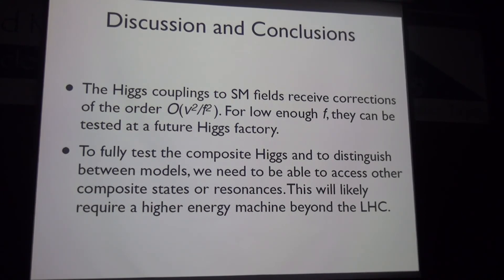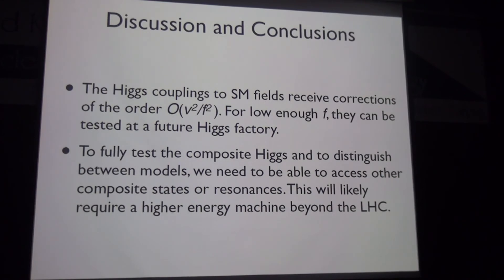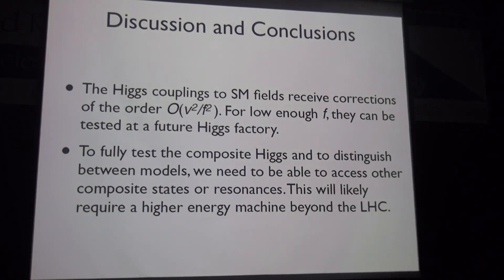Regarding other possible signatures: in composite Higgs models, Higgs couplings to standard model particles receive corrections of order V²/F². For F around 1 TeV, one expects about a 5% correction, testable at a future Higgs factory. However, to fully test the composite Higgs idea and distinguish between different models, one needs access to the composite states and resonances at high energies — likely beyond the LHC reach and requiring a new 100 TeV machine.